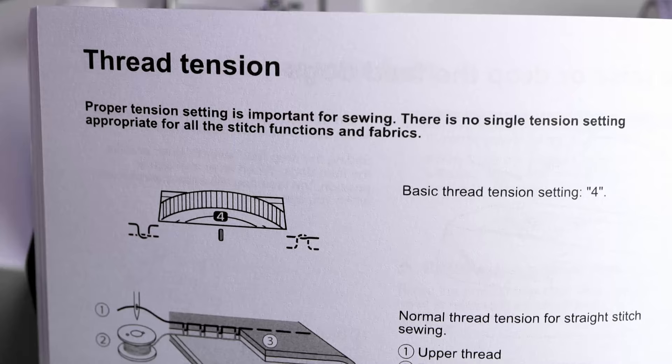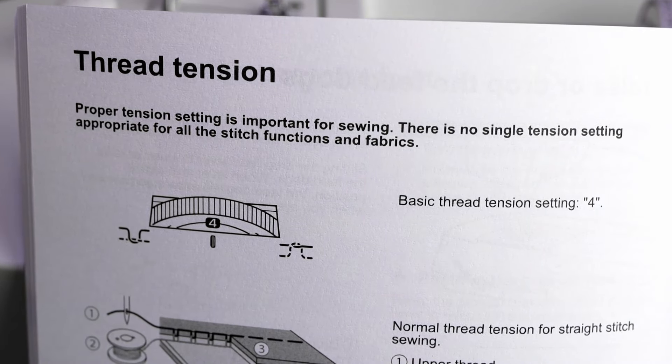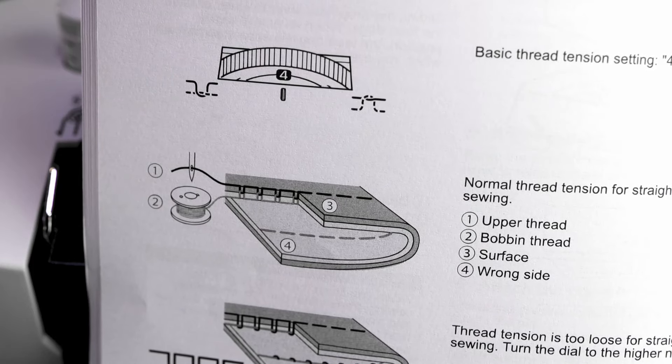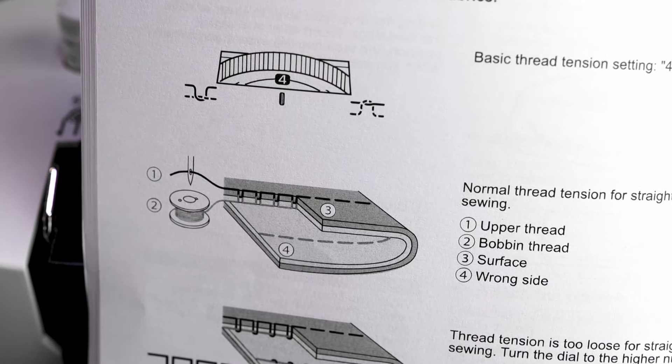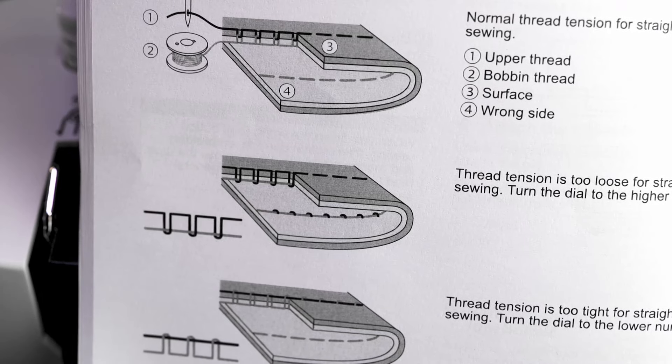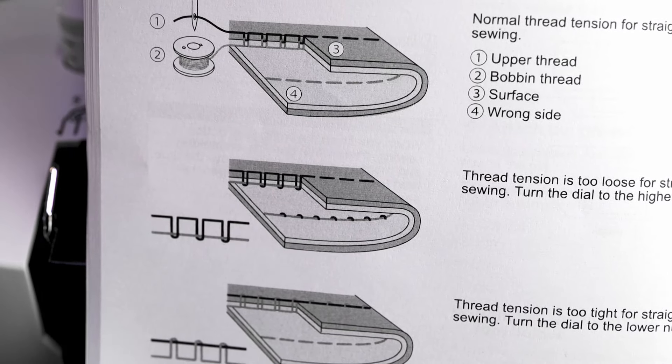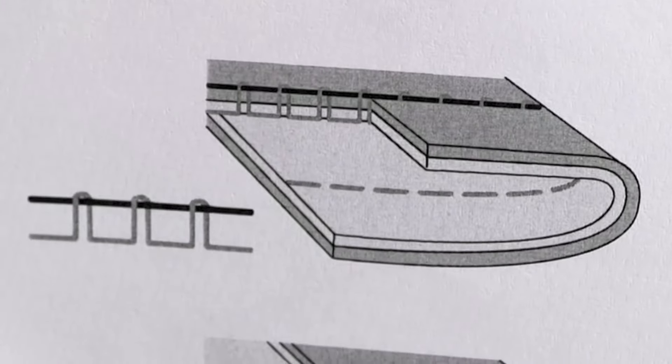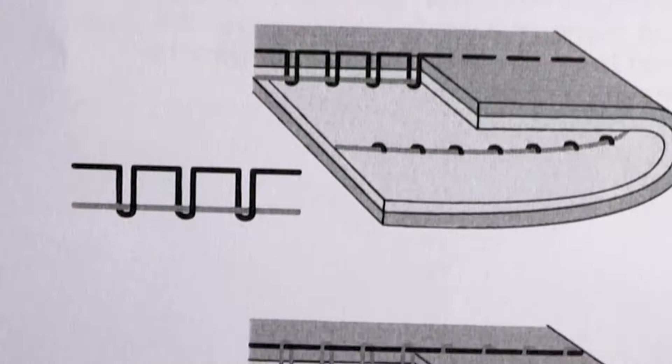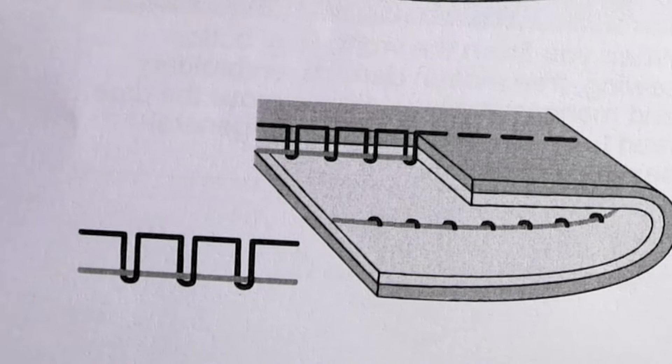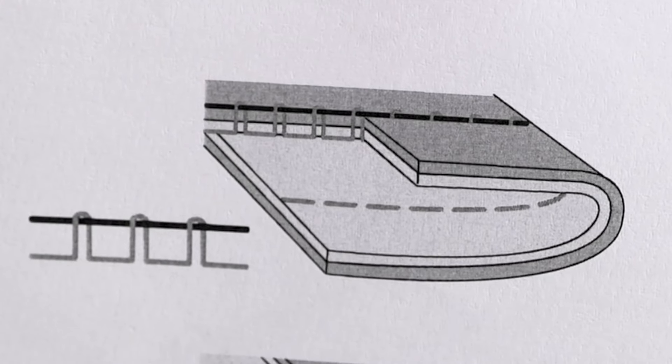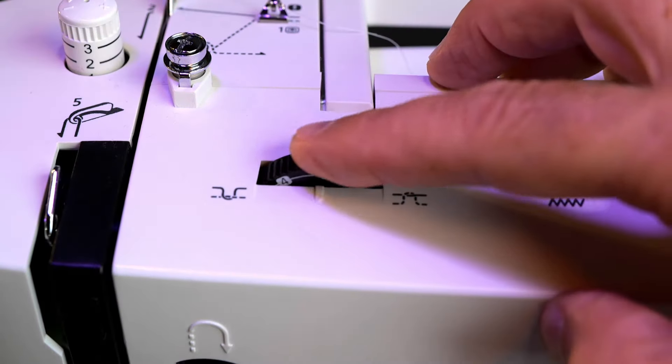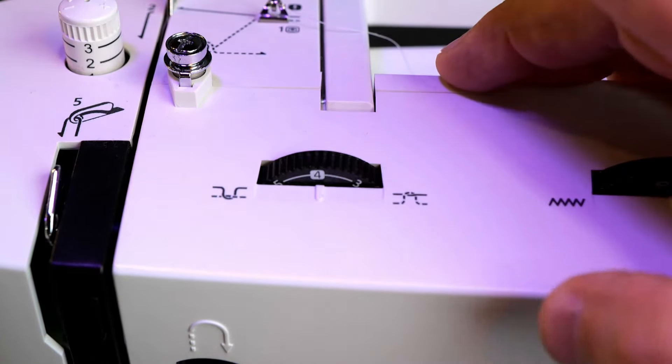So in the book we've got thread tension. It says the basic thread tension is number four. They show you the thread that goes to the needle and the thread that goes to the bobbin. Then on this next one it shows when the thread tension is too loose it's getting pulled to the bottom, and they're showing what it looks like on the fabric and this is what it looks like when the top tension is too tight. It tells you if the tension is too loose you move to a higher number, and when the tension is too tight you move to a lower number. The higher the number the higher the tension. Lower numbers are lower tension. That's easy.